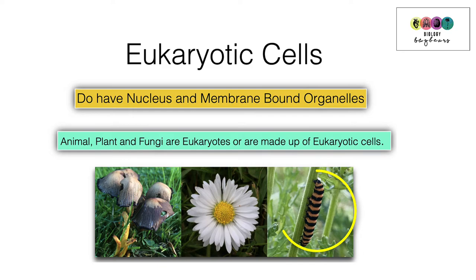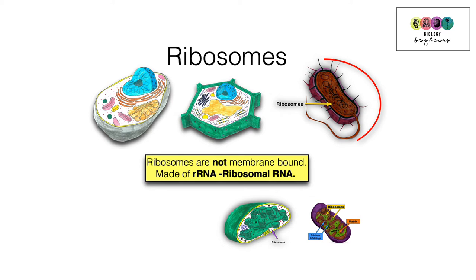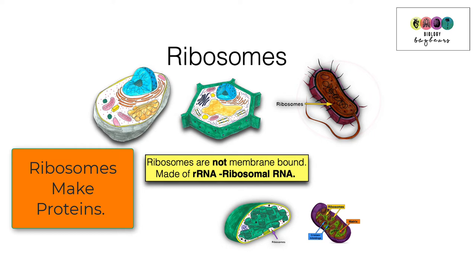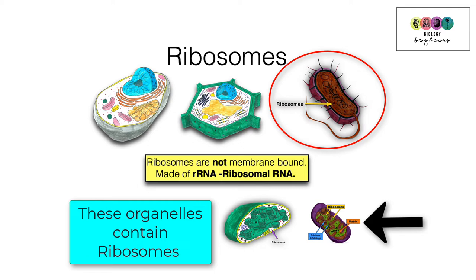Both prokaryotic and eukaryotic cells contain tiny organelles known as ribosomes. Ribosomes are not membrane-bound, which is why you find them in bacteria — bacteria being prokaryotic. The function of ribosomes is to make proteins. You'll also find small ribosomes similar to those in bacteria inside the mitochondria and the chloroplast.